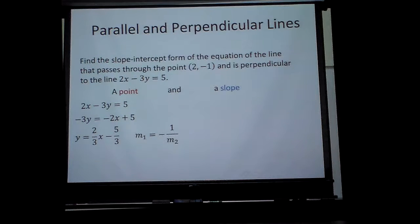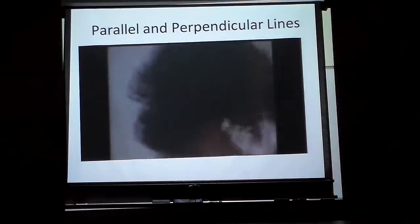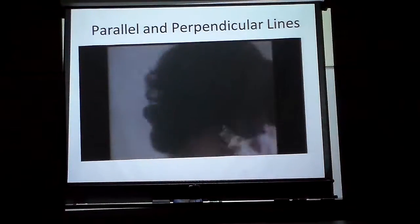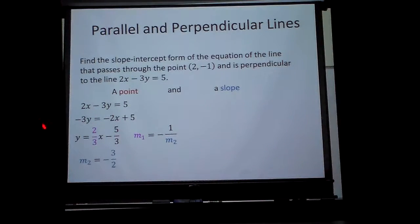But I need it to be a negative reciprocal. So if the slope is two thirds, turn it upside down and make it negative. So two over three, I turned it upside down and made it negative. That's my slope for the second point.